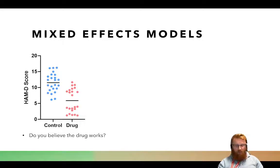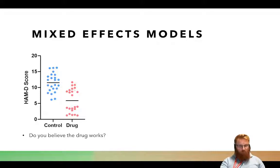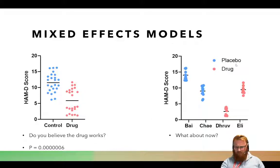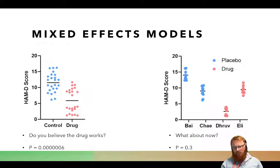Here's another example. This is the HAMD score — the Hamilton Depression score. We've got some drug we think is an antidepressant. Here are our data points: roughly 20 in the control group and 20 in the drug group. If this was truly 40 independent data points, we would get P equals 0.000006. But what if it was actually four people, each with about 10 data points? Here you can see it's kind of meaningless — what if one subject naturally had a low depression score? If we feed this data into the mixed effects model, it tells us P equals 0.03. You'd need many, many more subjects to take anything meaningful from that kind of experimental design.